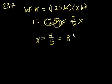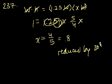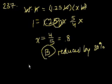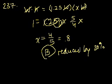So another way to view it is, he's working 80% of the hours that he used to work. So he reduced by 20% the amount that he worked. And that will be choice B. Next problem, 238.